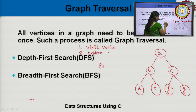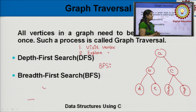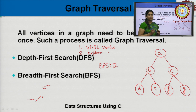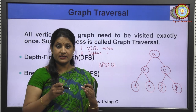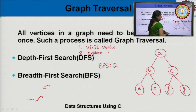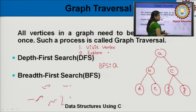In BFS, we can start traversing from any vertex. Suppose we start traversing from node A — A is just visited. Now start exploring A. Exploring A means visit all its adjacent vertices. The adjacent vertices of A are B and C. You may choose any order — B first or C first. Suppose we choose B first. So exploring A means start visiting its adjacent vertices, B and C.